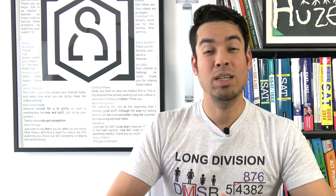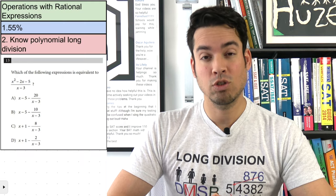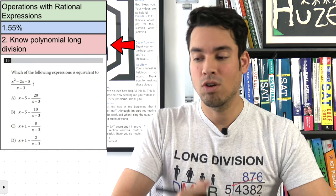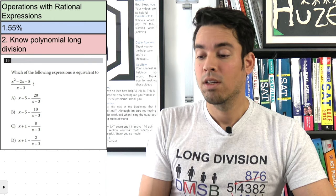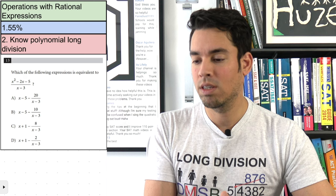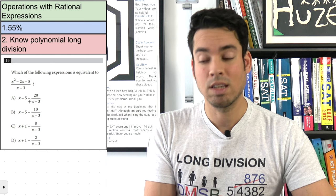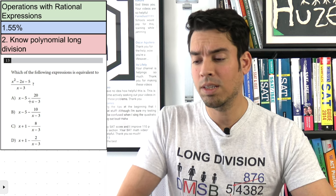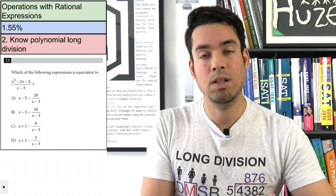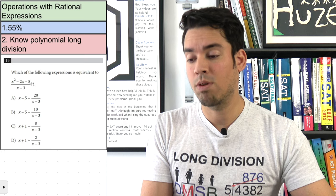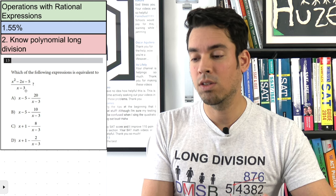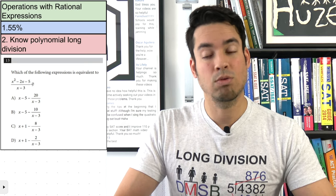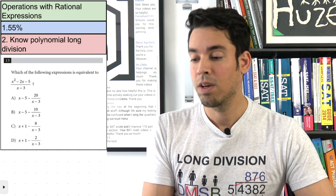Next is operations with rational expressions, which also constitutes 1.55% of the test. The strategy is to know polynomial long division. These problems ask which expression is equivalent to a given one. When you see a top polynomial divided by a bottom one, you can use polynomial long division to find the remainder and get your answer.